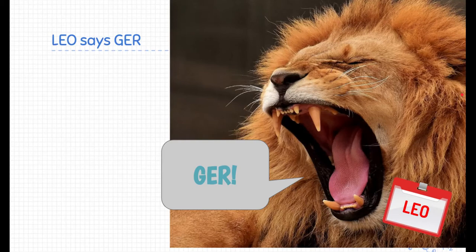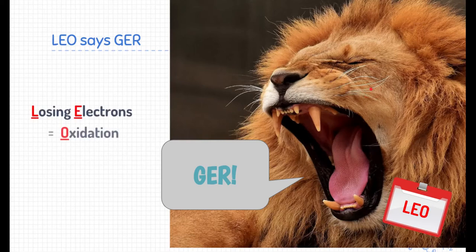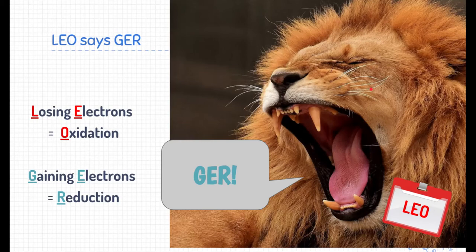Here's something I want you to remember: Leo the lion says GER. Leo stands for 'losing electrons is oxidation,' and GER stands for 'gaining electrons is reduction.' This is just a way to remember which one is which — oxidation is losing electrons, reduction is gaining electrons. Leo the lion says GER.